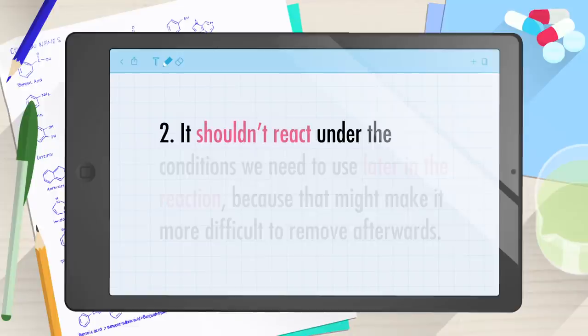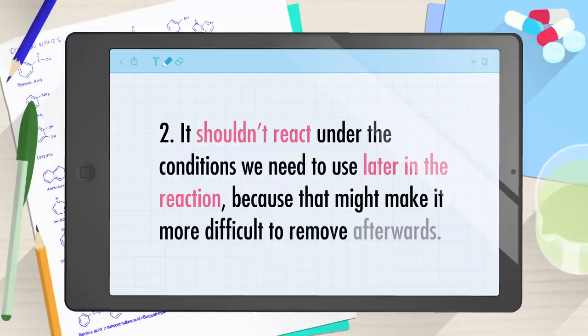We want to avoid multiple additional reactions or using inconvenient reaction conditions, just like we want to smoothly change into a new spy outfit, not fumble around with an ironing board before swapping shirts. Two, it shouldn't react under the conditions we need to use later in the reaction, because that might make it more difficult to remove afterwards. Just like we need a disguise to work in all locations.